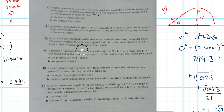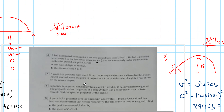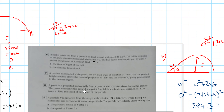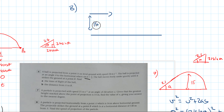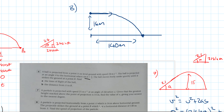Question 8: A particle is projected horizontally from point A, which is 16 metres above horizontal ground. The particle strikes the ground at point B, which is 140 metres horizontally from A. Find the speed of projection. The object is fired exactly horizontally, so it travels 140 metres horizontally while falling 16 metres vertically.